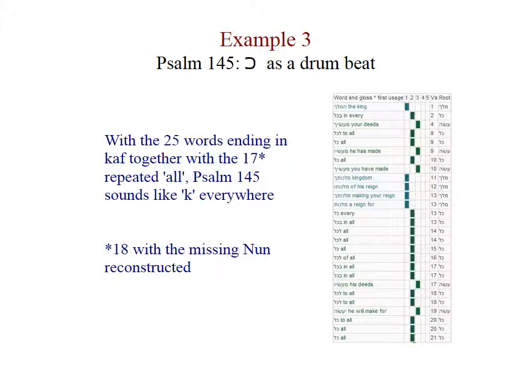Here is yet another example of a different sort of pattern. In this case, a host of 43 k-sounds in the poem. In English, the sounds are 'you,' 'your' — the final singular second person pronoun ka — and kol, the Hebrew for 'all' or 'every,' emphasized here almost as a drumbeat. Psalm 145 is the final alphabetic acrostic.